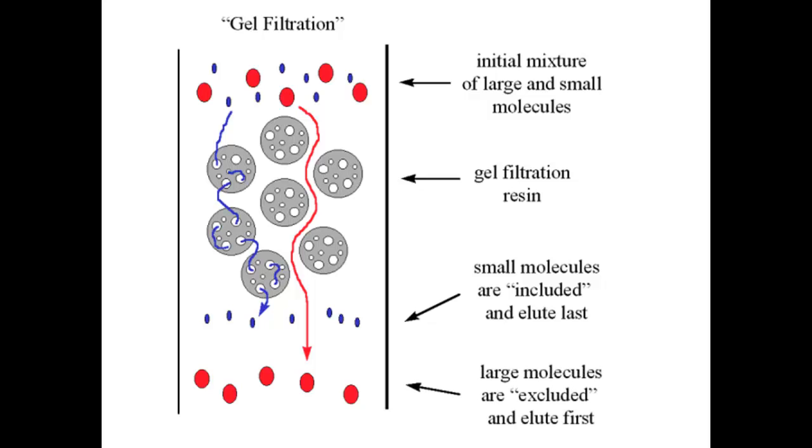And the large molecules are excluded and elute first because they cannot penetrate through the beads and will take an alternative path through the gaps between the beads and will elute out first.